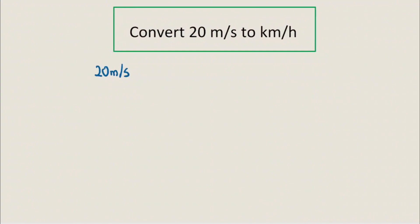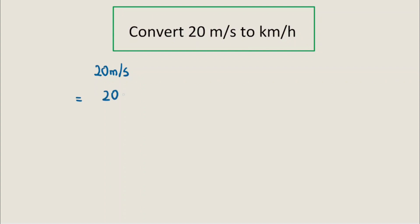In this video we'll learn a simple way to convert meters per second to kilometers per hour and vice versa. First, let's attempt to convert 20 meters per second to kilometers per hour. We can think of 20 meters per second as an object moving 20 meters every second.